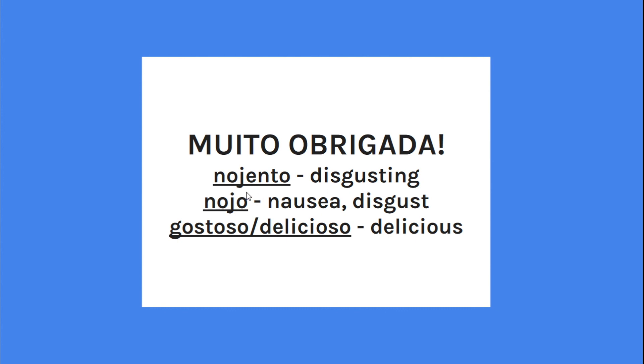Nojento quer dizer 'disgusting' — we want to talk about comida, qualquer coisa que você acha nojento, porque vem da palavra nojo, que quer dizer nausea, disgust. Nojo, nojento. And then the contrário disso — the opposite — is gostoso, delicioso. Gostoso is also used to describe people, right? So it can also mean sexy or really attractive. You can say: ela é muito gostosa. But you can also use it for food. And notice, gostoso comes from the verbo gostar.